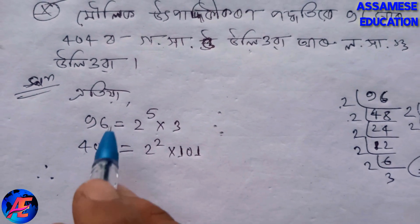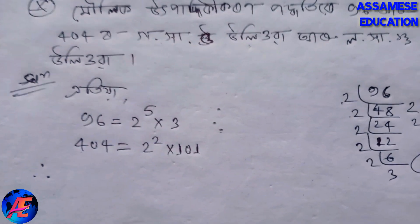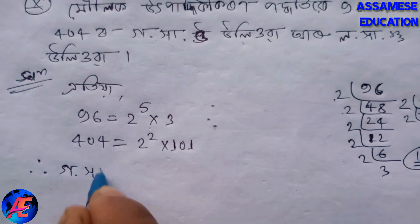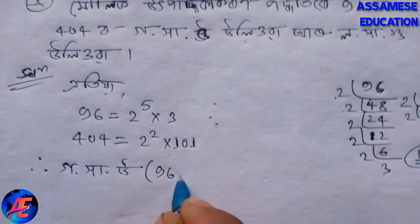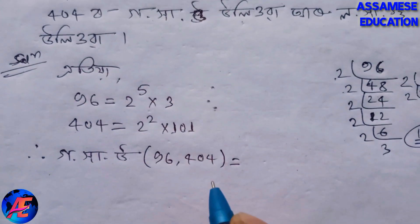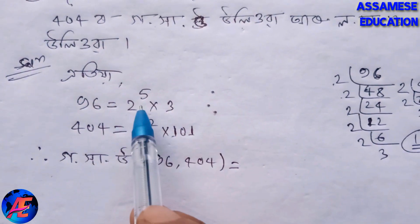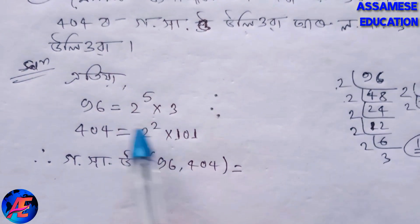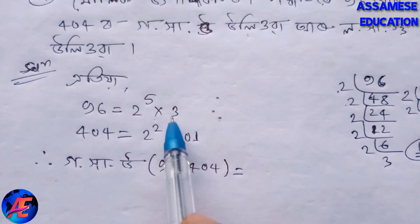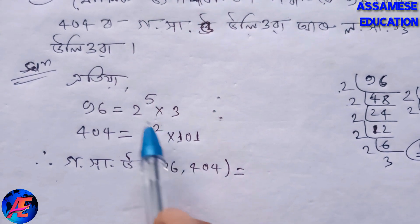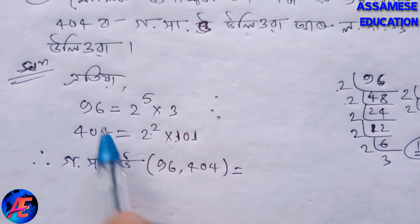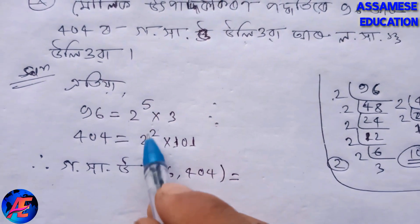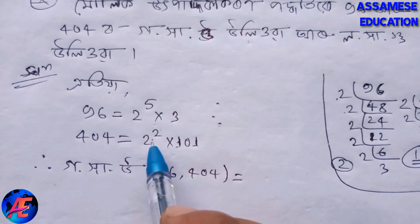The common factor is the lowest power. So the HCF of 96 and 404: the common factor is 2 to the power 2, which equals 4. So the HCF is 4.